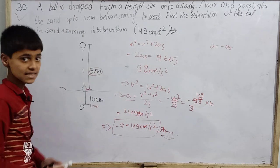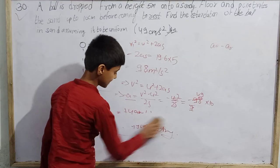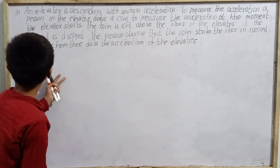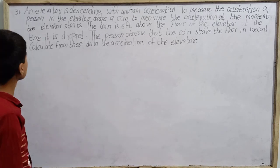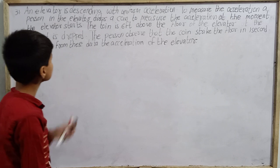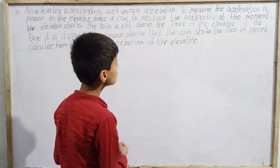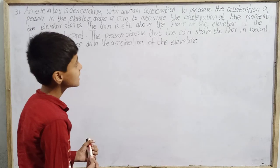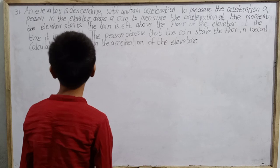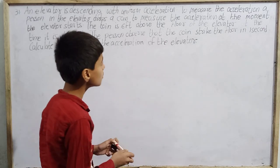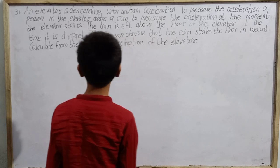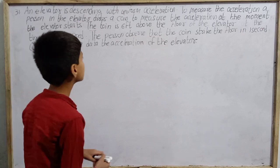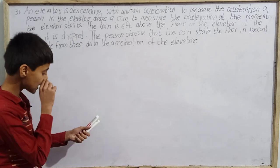Now let us move to our next question. Moving to question number 31 from the exercise, which is a very good question. To measure the acceleration, a person in the elevator drops a coin. At the moment the elevator starts, the coin is 6 feet above the floor. The person observes that the coin strikes the floor in 1 second. Calculate the acceleration of the elevator.